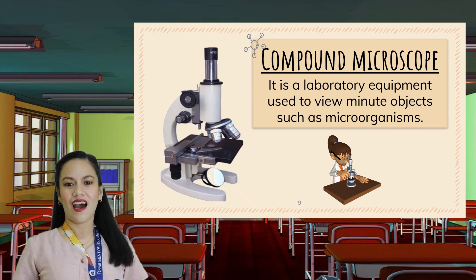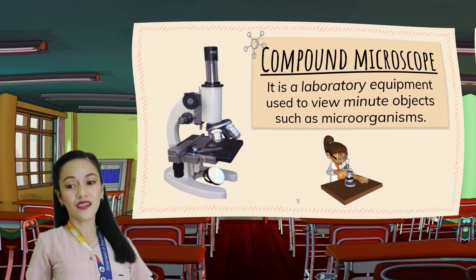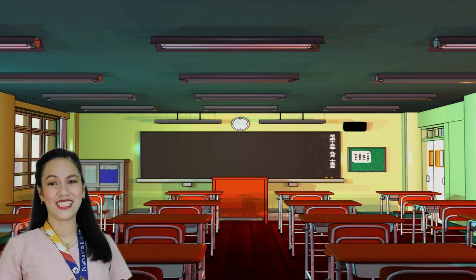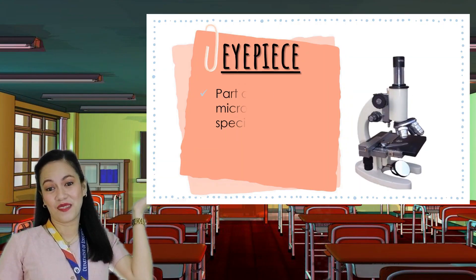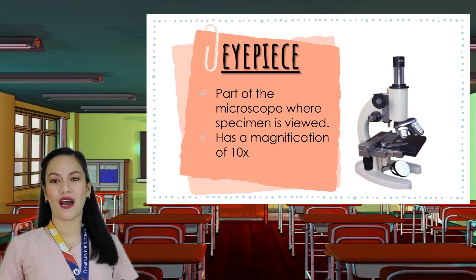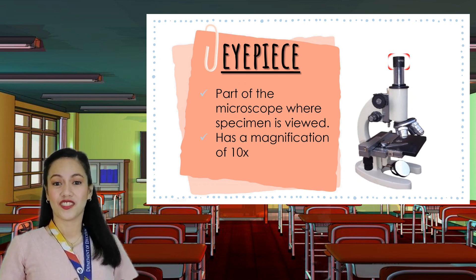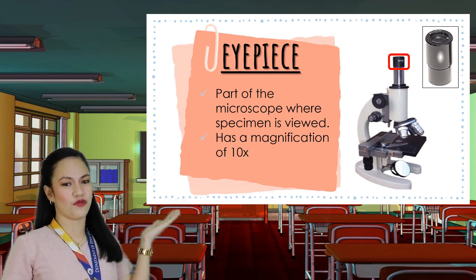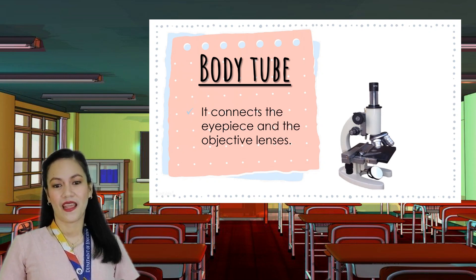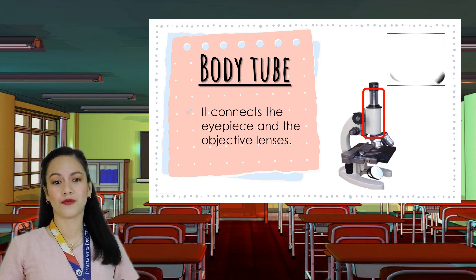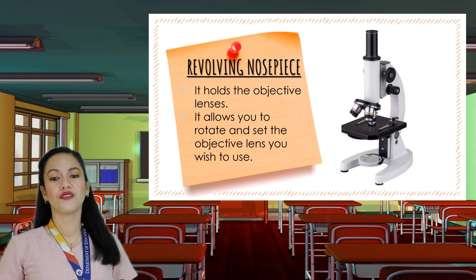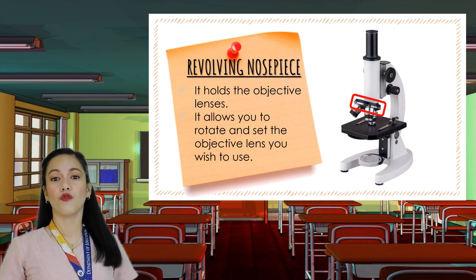To better understand how a compound microscope works, let's discuss the parts and their functions. Let's begin with the eyepiece — the part of the microscope where the specimen is viewed. It has a magnification power of up to 10 times. Just right below the eyepiece is the body tube, which connects the eyepiece and the objective lenses. Below the body tube is the revolving nosepiece, which holds the objective lenses and allows you to rotate and set the objective lens you wish to use.